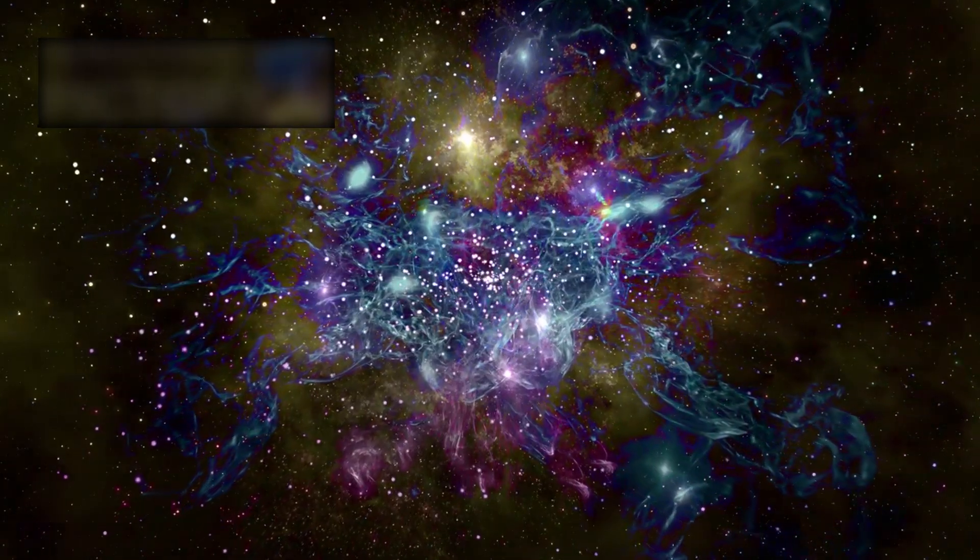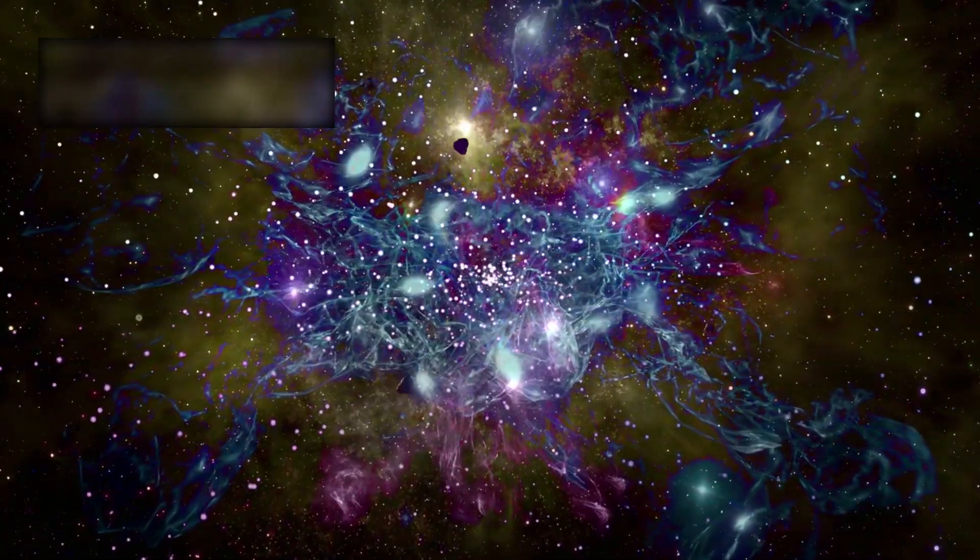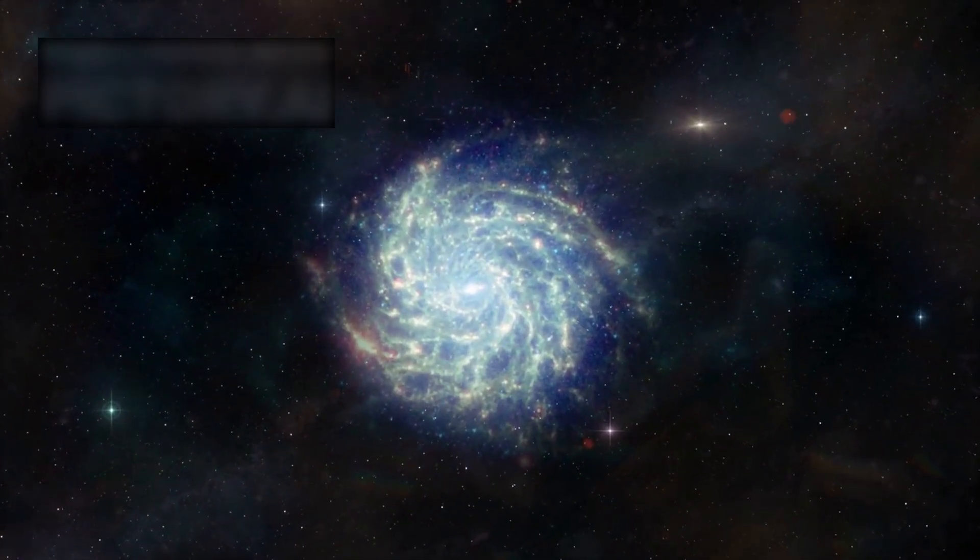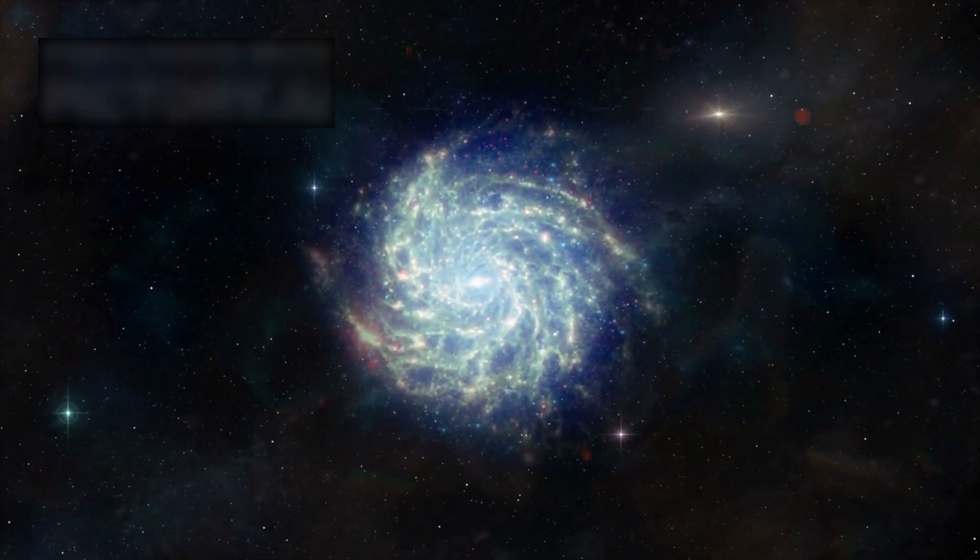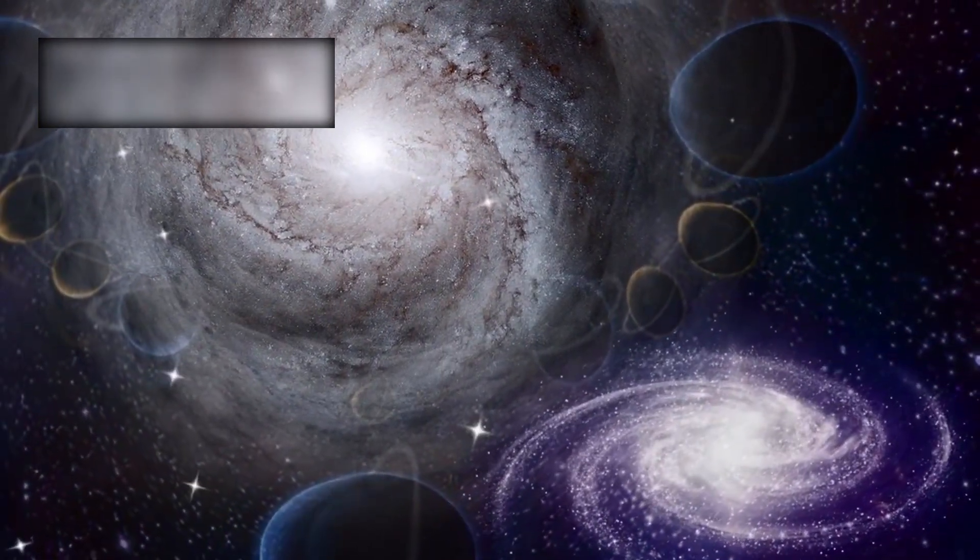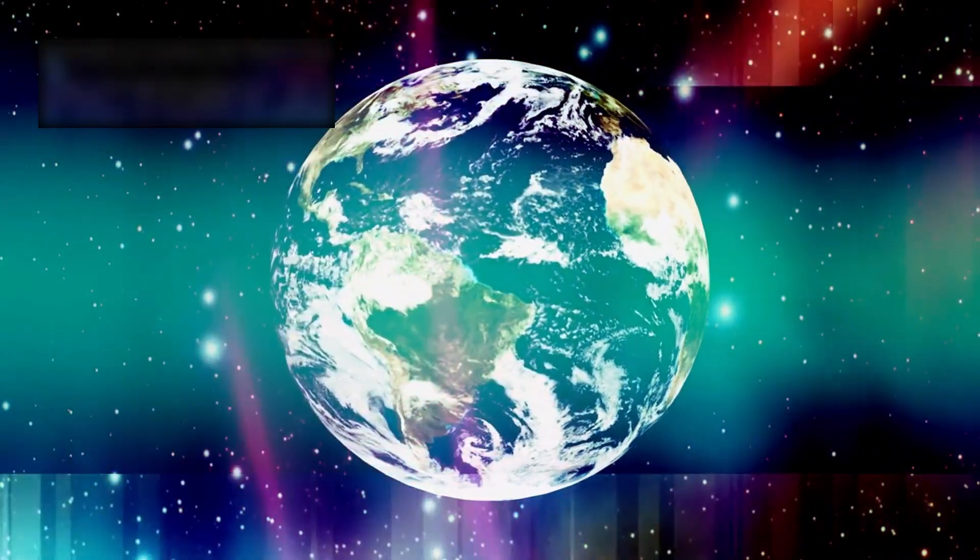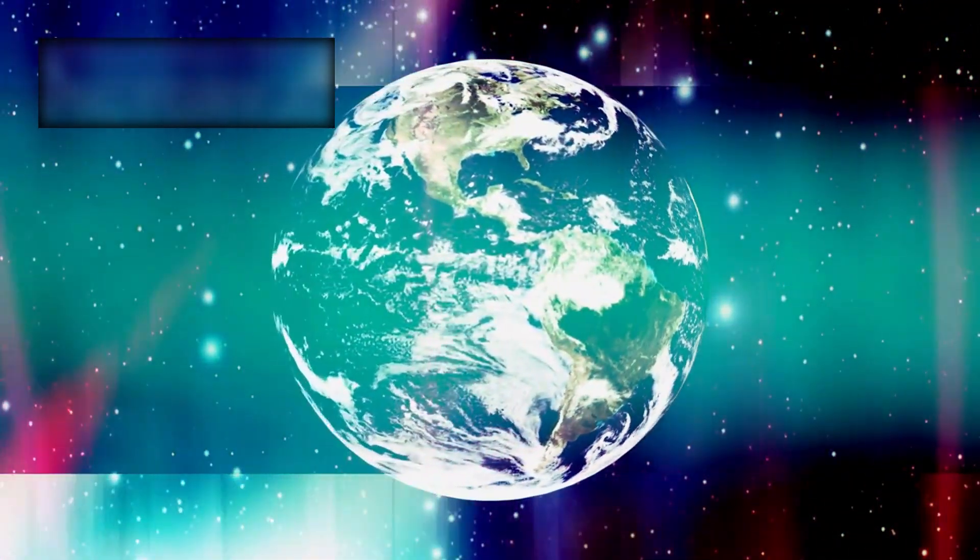Galaxies like GSZ 140 were not fragile infants. They were titans, roaring into existence with impossible maturity. And if one such galaxy exists, how many more are hidden across the vast canvas of space? How many others sprinted through their youth, rewriting the rules of cosmic growth?